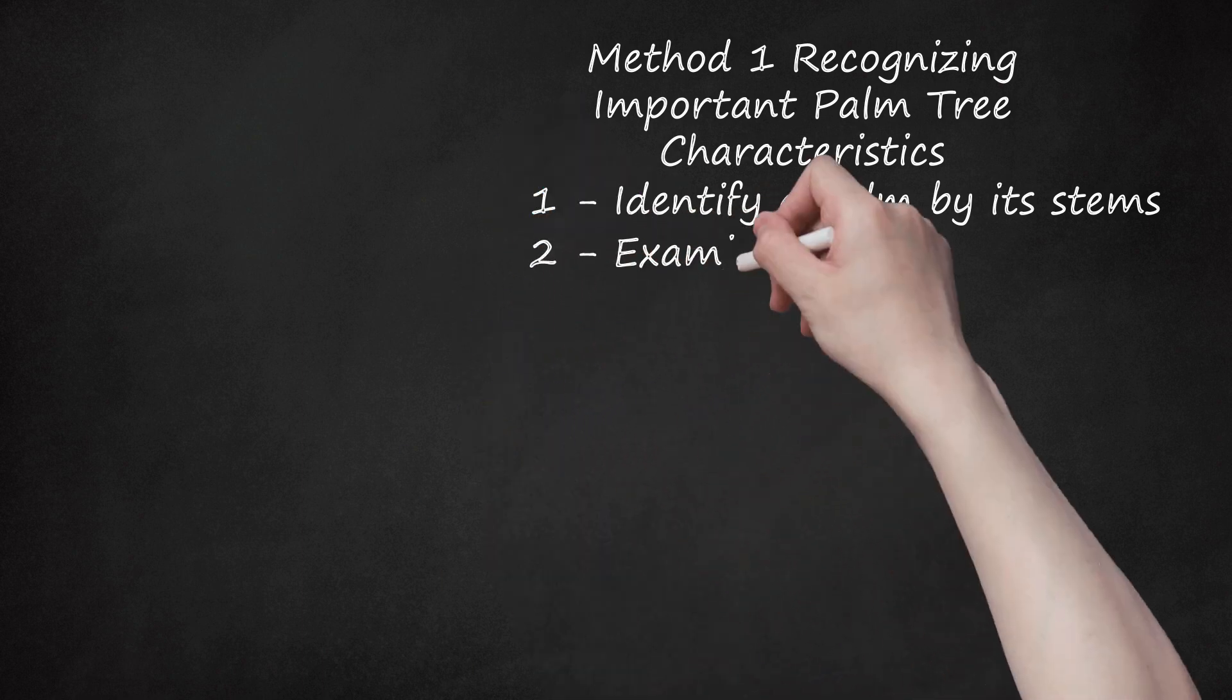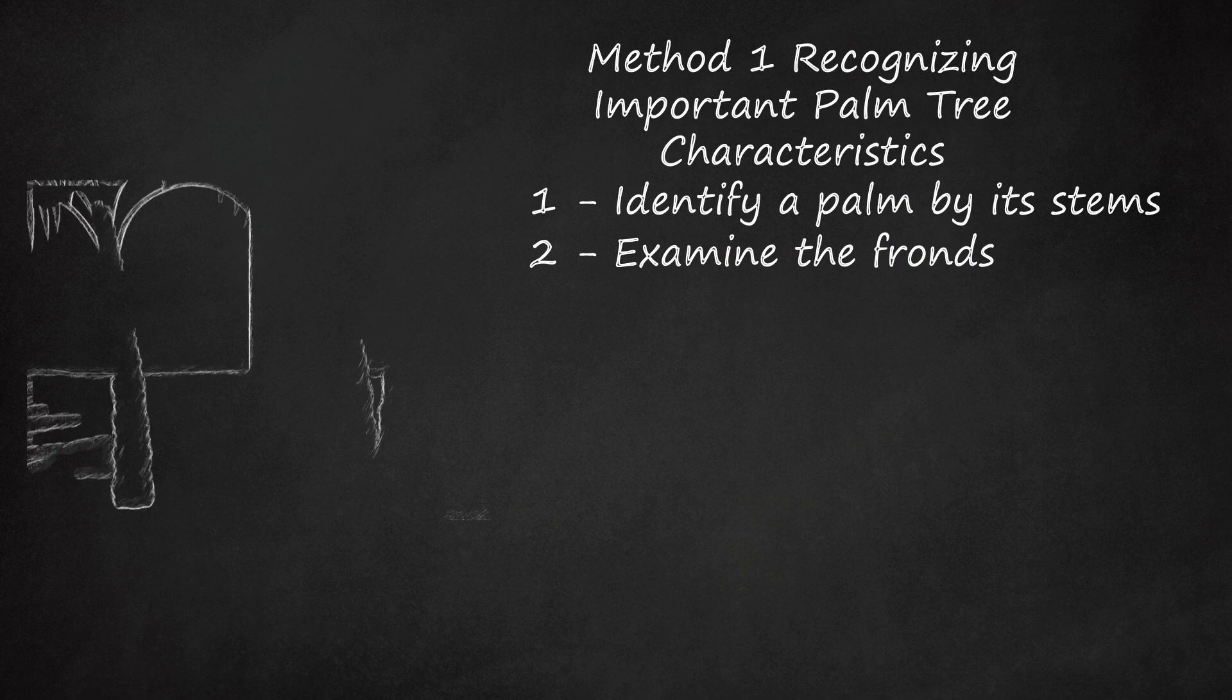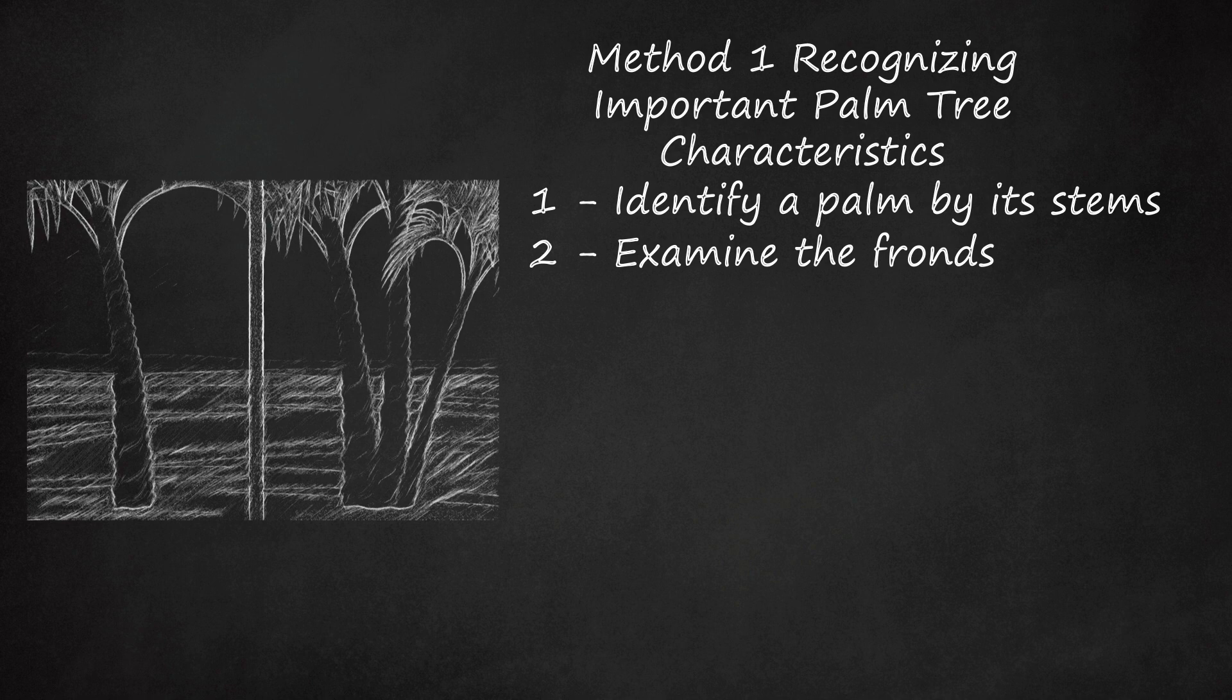Second, examine the fronds. The best way to begin classifying your palm tree is based on the fronds. Feather-like fronds, pinnate, are found on some of the most popular and common palm tree types like the areca palm, coconut palm, queen palm, and date palm.